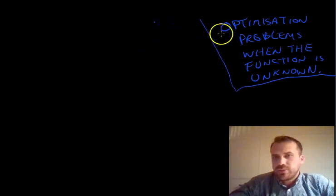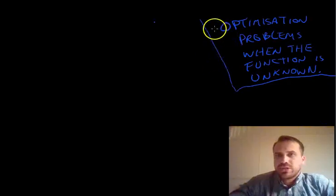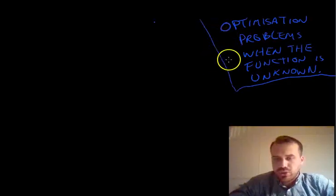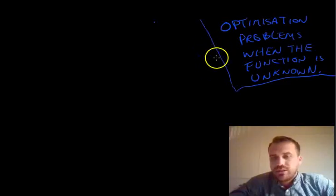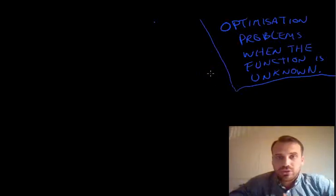Alright, so in this video we're doing optimization problems. Previously we've done optimization problems, but we've always known what the function was. This time we're going to do some optimization problems where we need to create the function ourselves. So typically this is going to be some sort of word problem. You're going to have to interpret that word problem and then come up with a function that you can optimize.